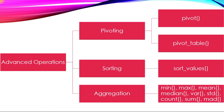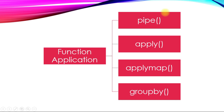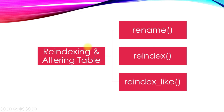Next were advanced operations: pivoting, sorting, and aggregation. For pivoting there were two methods — pivot and pivot_table — since pivot has limitations. For sorting we use sort_values(). For aggregation: mean, max, median, std, count, sum, and mad. Then function application covered four methods: pipe, apply, applymap, and groupby apply. Finally, reindexing and altering tables covered rename, reindex, and reindex_like.